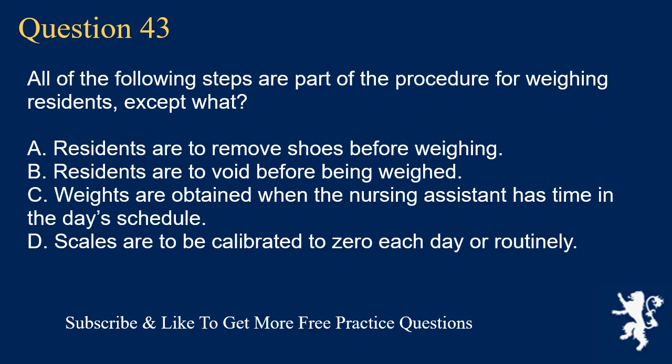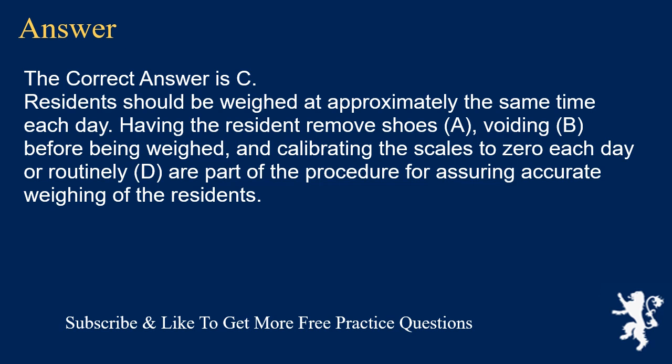Question 43. All of the following steps are part of the procedure for weighing residents, except: A. Residents are to remove shoes before weighing. B. Residents are to void before being weighed. C. Weights are obtained when the nursing assistant has time in the day schedule. D. Scales are to be calibrated to zero each day or routinely. The correct answer is C. Residents should be weighed approximately the same time each day. Having the resident remove shoes, voiding before being weighed, and calibrating the scales to zero are all part of the procedure for accurate weighing.